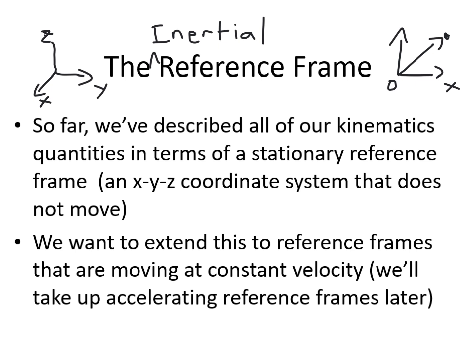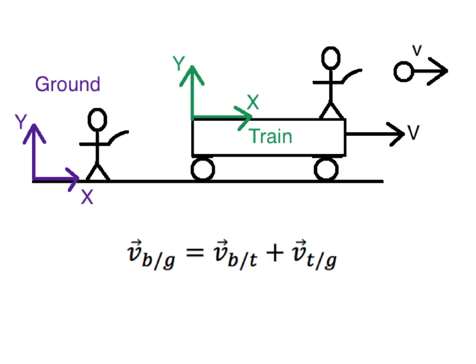Usually velocity is equal to zero, but not always. In this video, we're going to look at the 'not always' part — what happens when you have coordinate systems that are moving. We're going to start with the simplest kind of relative velocity problem: one where everything's moving in a straight line.